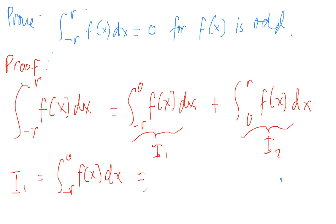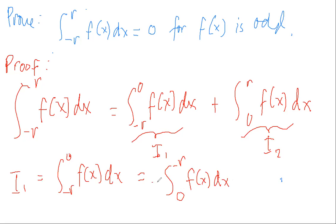Here we can use another property of integrals: this becomes the integral of f(x) dx from 0 to negative r, with a negative sign, since we interchange the positions of the upper and lower limits.